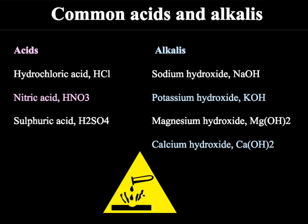Before we move on to titrations, a brief recap from Edexcel C1 on acids and alkalis. Common acids include hydrochloric acid (HCl), nitric acid (HNO₃), and sulfuric acid (H₂SO₄). On the alkali side we have sodium, potassium, magnesium and calcium hydroxide. All alkalis share a common OH group — the hydroxide group — and this is what makes an alkali an alkali.